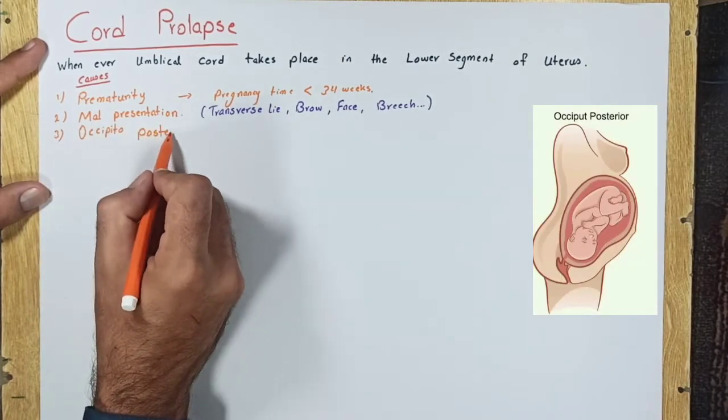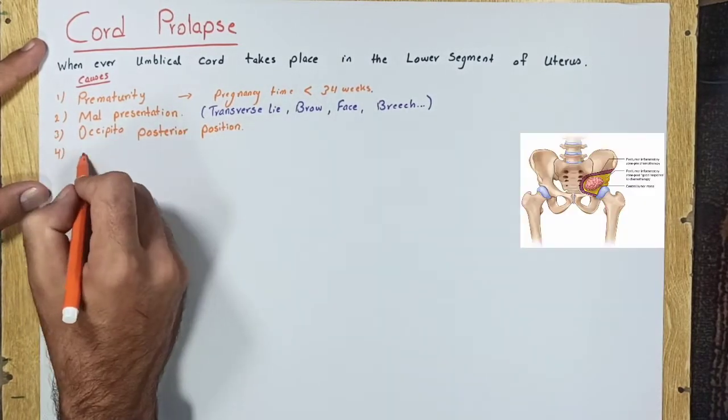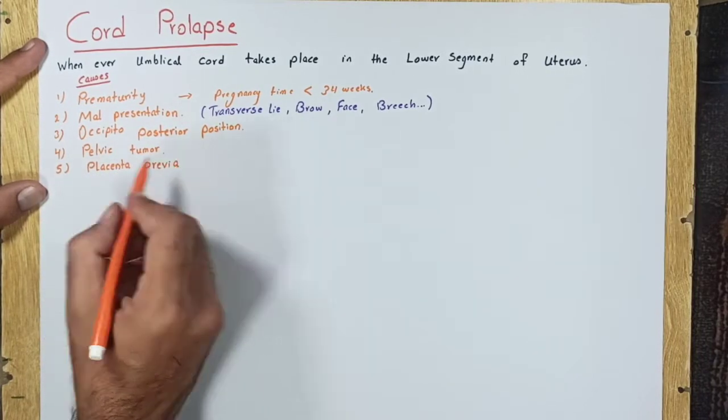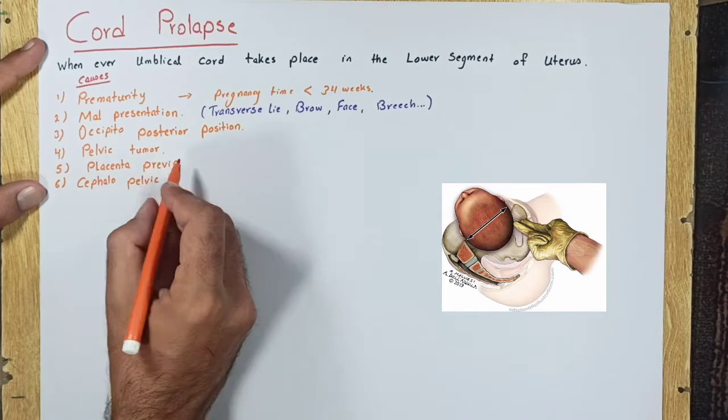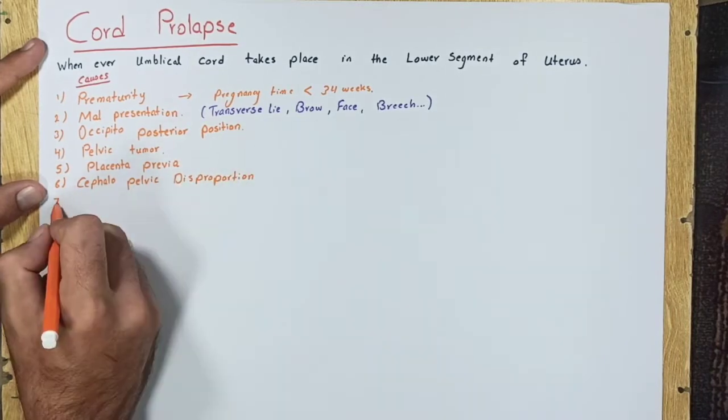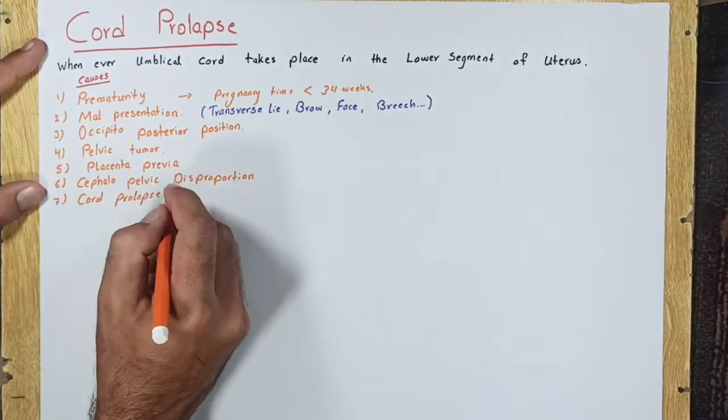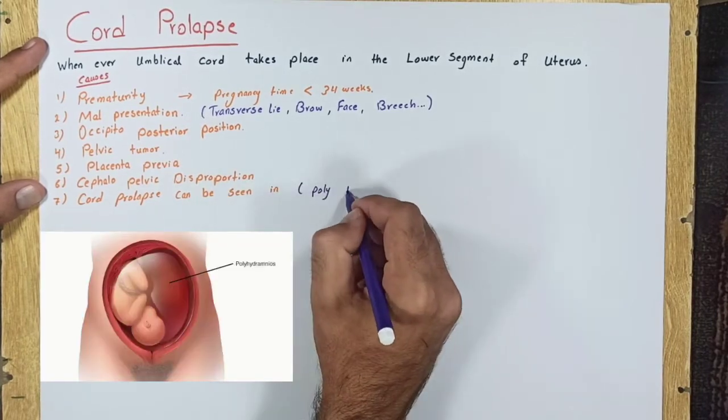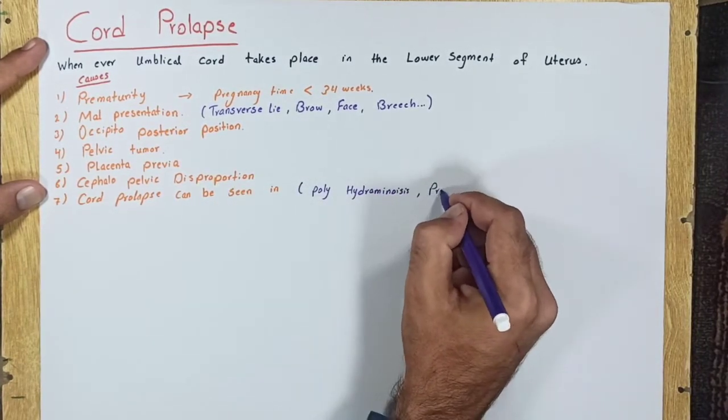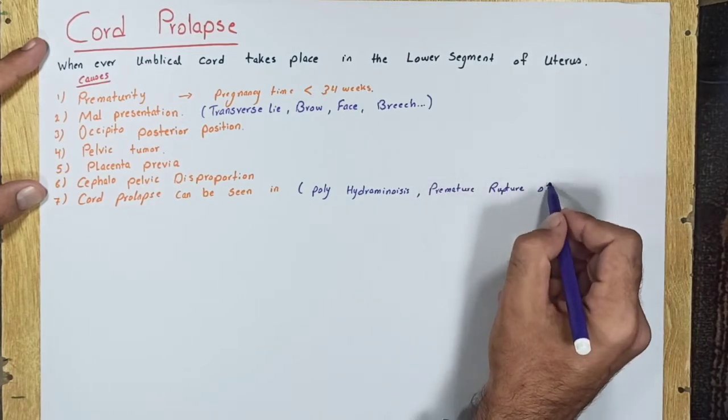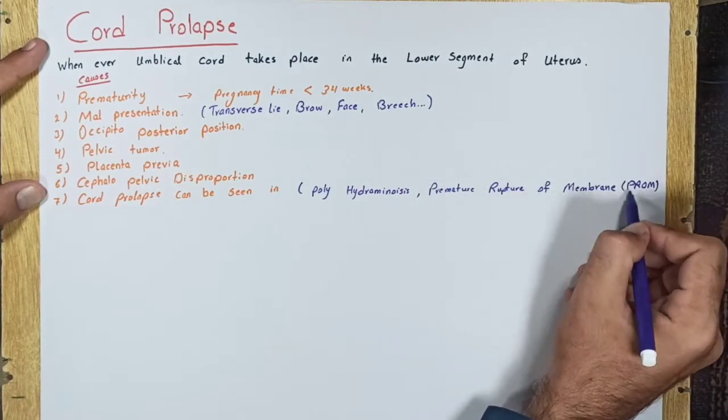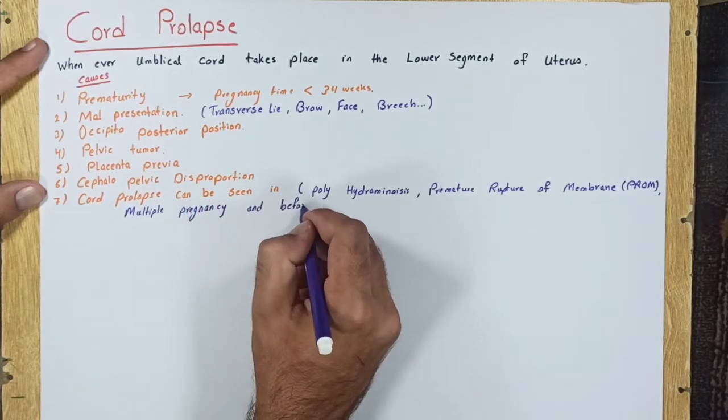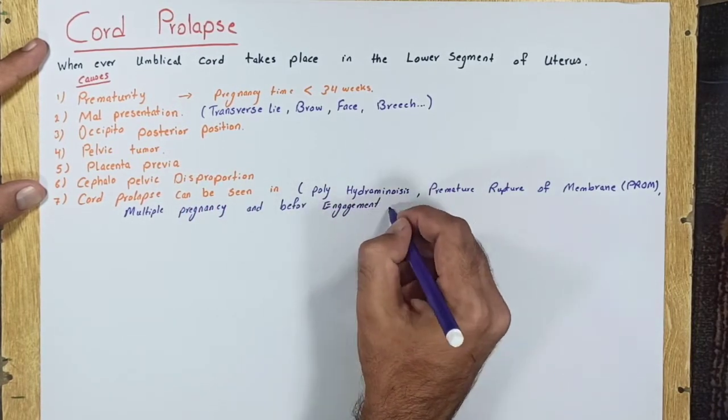Occipitoposterior position, pelvic tumor, placenta previa, cephalopelvic disproportion. Cord prolapse can be seen in polyhydramnios, premature rupture of membranes or PROM, multiple pregnancy, and before engagement of presenting parts.